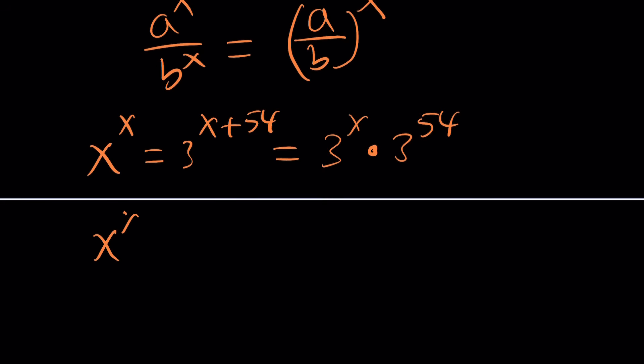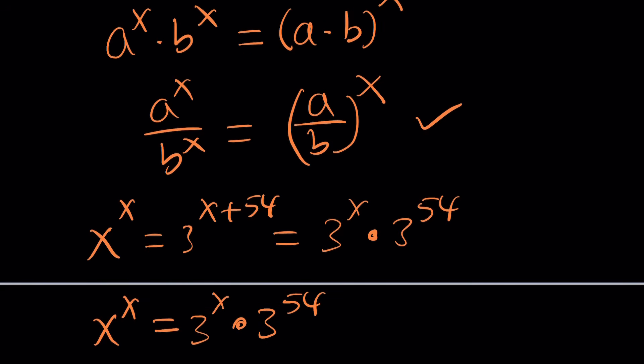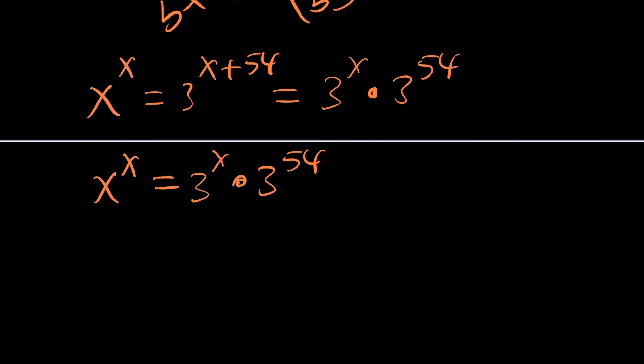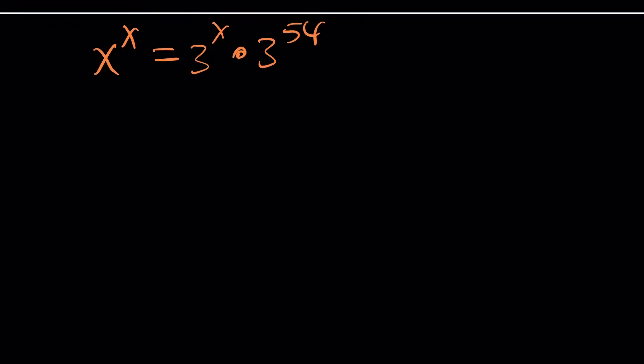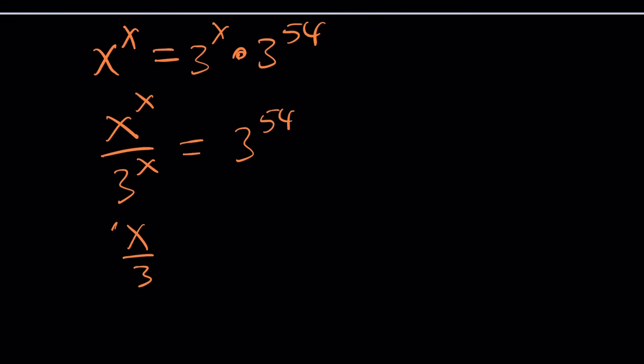So this is what we have now. We have x to the x equals 3 to the x times 3 to the 54. And what did I say? I'm going to use this property. How do I use it, though? Well, I have two expressions with the same exponent. I'm going to bring them together. So let's divide both sides by 3 to the power of x. Again, you don't need to evaluate this number because we're going to make it nicer anyways. And now we have the same exponent. So we can now write this as x over 3 to the power of x with a single base. And then it is equal to 3 to the power of 54.